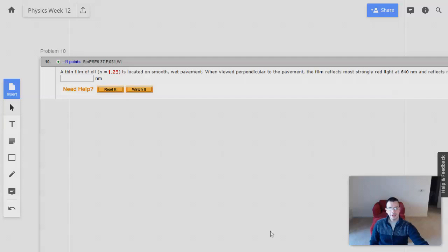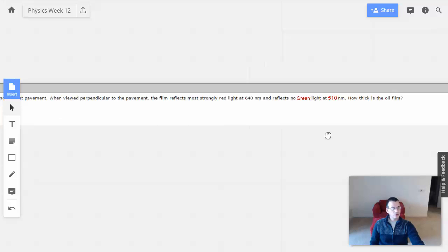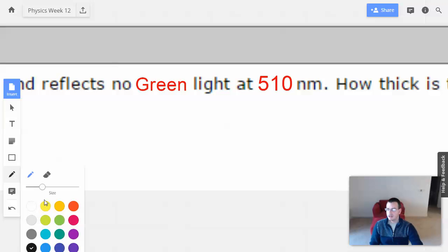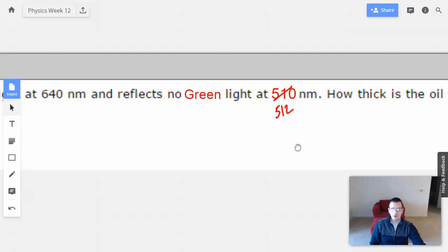Week 12, problem 10. A thin film of oil with N equals 1.25 index of refraction is located on smooth wet pavement. When viewed perpendicular to the pavement, the film reflects most strongly red light at 640 nanometers and reflects no green light at 500. I'm going to change this to 512, you'll see why in a bit. 512 nanometers. How thick is the oil film?